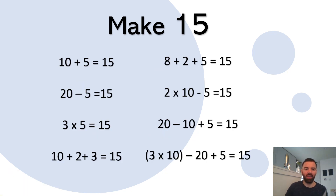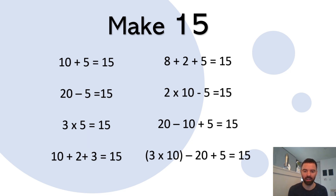Three times 10 is 30, take away 20 is 10, add 5 is 15 — that's a good one! I didn't think of that. I don't really want to see what comes next.